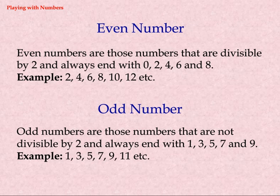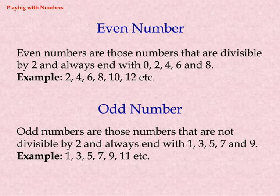Odd numbers are those numbers that are not divisible by 2 and always end with 1, 3, 5, 7, or 9. Examples: 1, 3, 5, 7, 9, 11, etc.